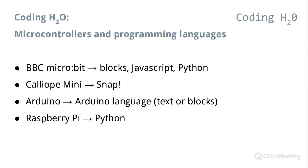The programming languages and microcontrollers used can be any of these options. For younger students, the BBC micro:bit and Caliope mini are good choices because both can be programmed using a block programming language, which is very simple for younger students or those without much programming experience. If you have students with more knowledge of electronics and programming, we would recommend either Arduino or Raspberry Pi, which you can program using a text programming language — better for advanced students. You can adapt to either younger or more experienced students.